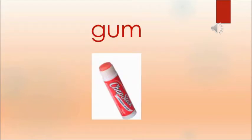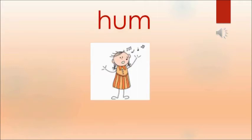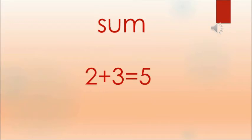The first word is GUM. G, UM, GUM. GUM means glue — any sort of glue is GUM. The next one is HUM. HUM means to sing a song, it is called HUM. Now the next one is SUM. SUM means to do the sums — the math sums which we are doing is called SUM.